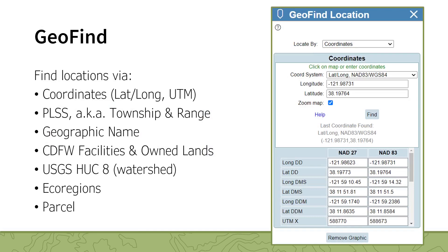The GeoFind tool can be used to find specific locations through a variety of methods and then recenter the map on the specified location. The location methods include coordinates, partial or complete address, township and range, geographic name search, quad, city, county, CDFW facilities and owned lands, watershed, ecoregions, and parcel number. The coordinates locate-by method can also be used to return a list of location information — simply click anywhere in the map and the tool panel will update with a variety of information about the selected point. You will notice that some of the methods have a help link available, which opens a document with further information.